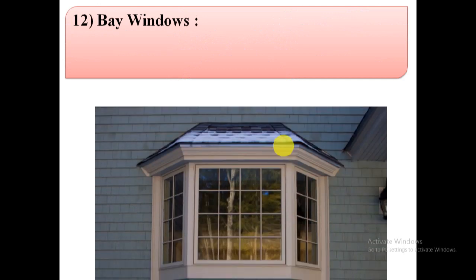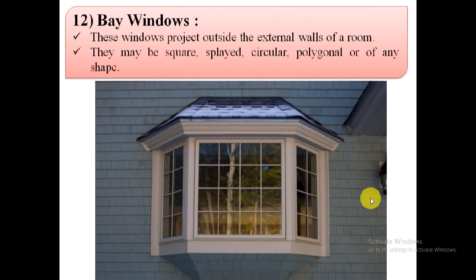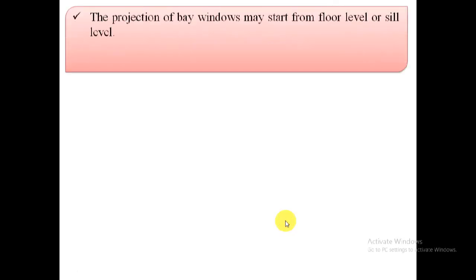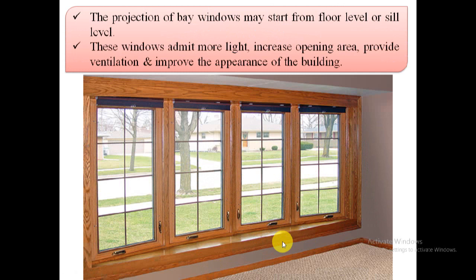The next type is bay windows. Bay windows project outside the external walls of a room. This bay window may be square, splayed, circular, polygonal, or of any shape. The projection of a bay window may start from floor level or sill level. Bay windows admit more light, increase opening area, provide ventilation, and improve the appearance of the building.